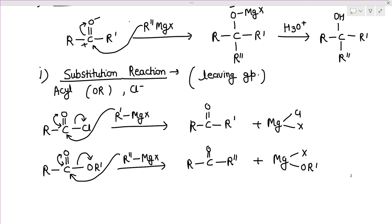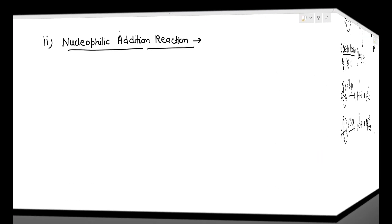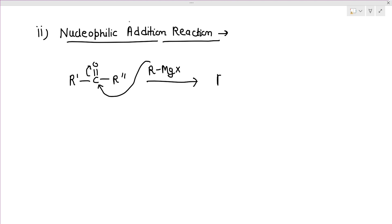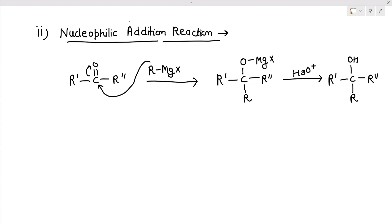Whenever there is no leaving group, the Grignard reagent undergoes nucleophilic addition. For a ketone, RMgX attacks the carbonyl carbon; the π bond shifts to oxygen giving O⁻MgX, and after water hydrolysis we get an alcohol. This type of addition also occurs with ketene, isocyanate, and nitriles.